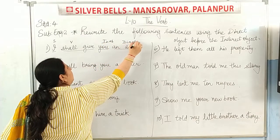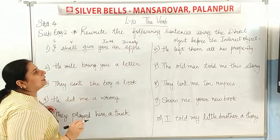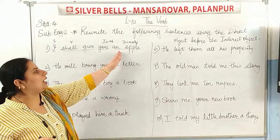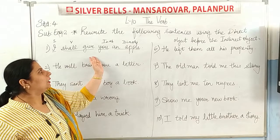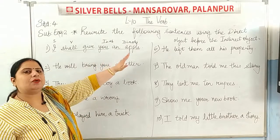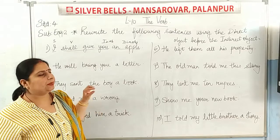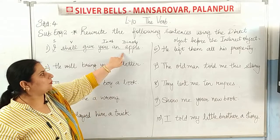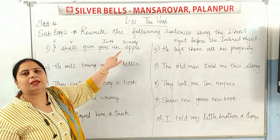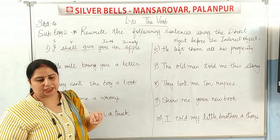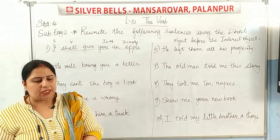Now, what we have to do is: bring the direct object forward and the indirect object to the back. When we do this, we have to add a preposition after the direct object.